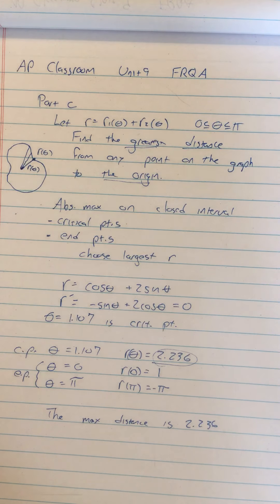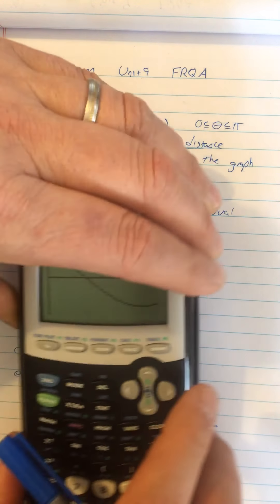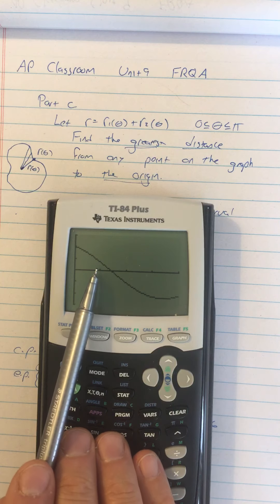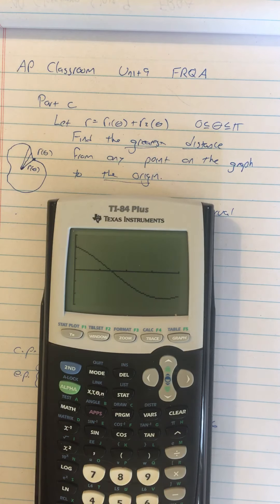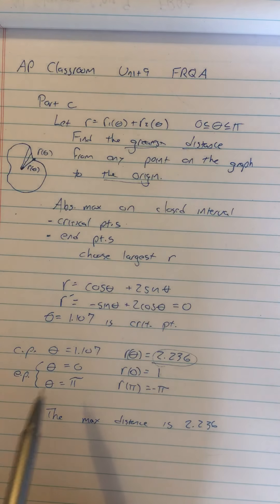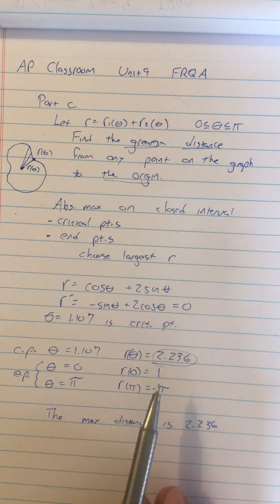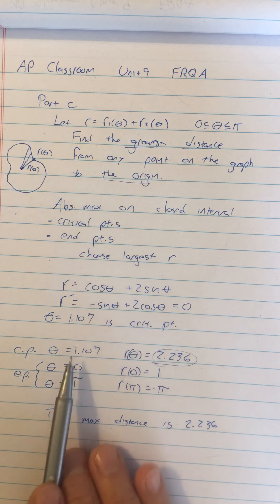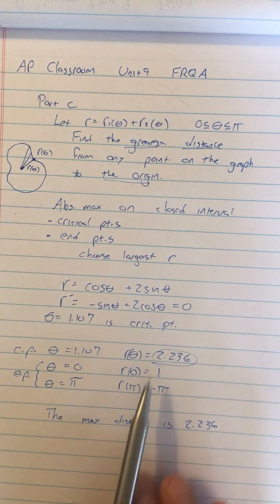You can do second derivative test. We can see that if we look at the graph, we can see that R prime is changing from positive to negative. So we know we're looking at a relative max. But establishing it's a relative max doesn't establish that it's an absolute max. We need to look at the endpoints because it could have been one of the endpoints was the absolute max. You can do a second derivative test on this. It's not too hard to get the second derivative of this and show that the second derivative of 1.107 is negative. But again, that only establishes a relative max. To get the absolute max, we need on our closed interval, we need to see the critical points and the endpoints and just see what the Y values are. In this case, the R values that go with them. And that's how the max distance is 2.236.